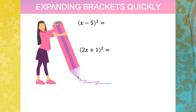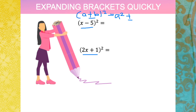Now, when we expand squared brackets, we notice we have expressions like (x minus 5) squared and (2x plus 1) squared. We can write this using the general form: the first term plus or minus the second term, squared, equals the square of the first term, plus or minus twice the product of the first and second terms.